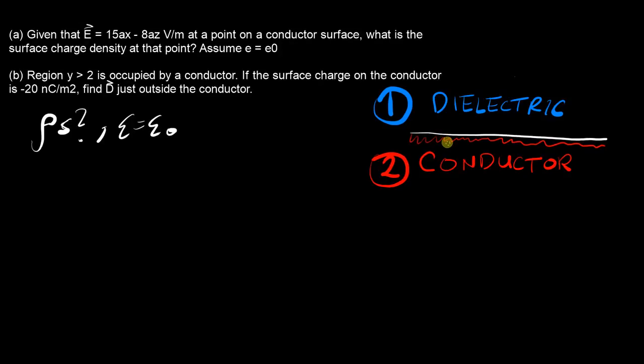So what's interesting is they don't tell you anything about what this boundary is like. They don't tell you it's at x equals zero so the normal vector is in the x direction. It just says that at some point on this conductor surface, we want to find the surface charge density ρs.